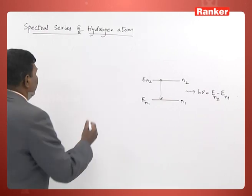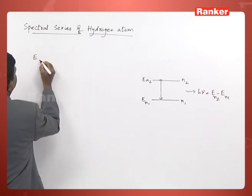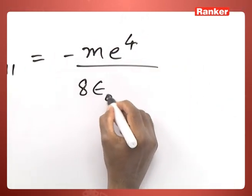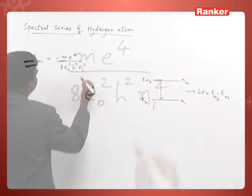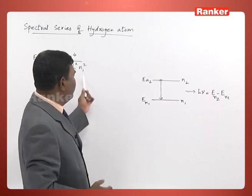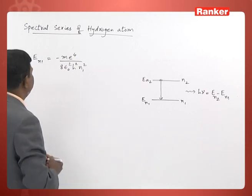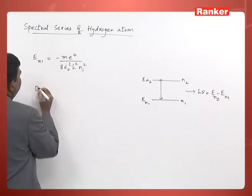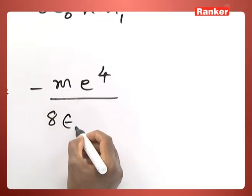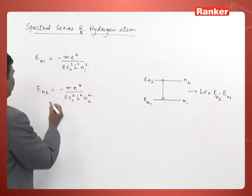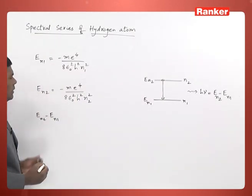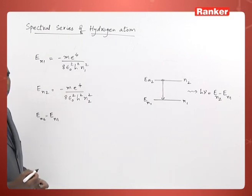We know that the energy of an electron inside a particular orbit En1 is given by: minus m·e⁴ divided by 8·ε₀²·h²·n1². This expression comes from the postulates of Bohr's atom model, where we substitute n1 in place of n. Similarly, we can obtain the expression for the energy in the second energy level En2 as: minus m·e⁴ divided by 8·ε₀²·h²·n2². What we require is the difference in the two energy levels, En2 minus En1, which we can equate to hν to find the frequency of emitted radiation.